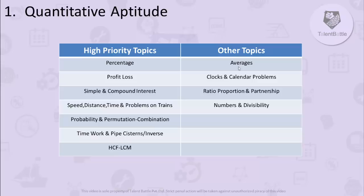There are some other topics on which Wipro has asked questions previously, but the number of questions was less. These include averages, clocks and calendar, ratio, proportion and partnership, and numbers and divisibility. You need to study all these topics, but try to prioritize — first start with the high priority topics.